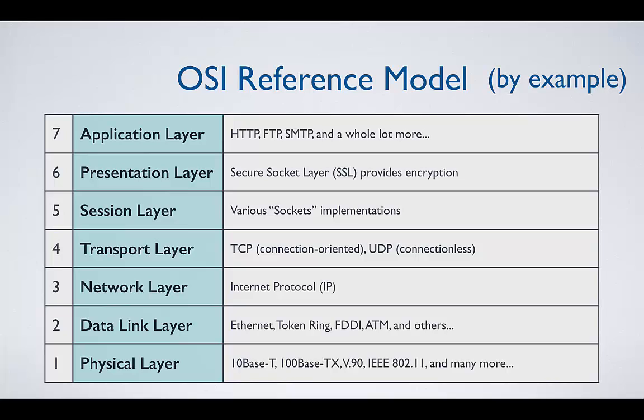At the data link layer, we have protocols related to our local area network, like Ethernet, Token Ring, FDDI — which is for optical fiber — ATM for voice and video, and many more. The network layer, as we mentioned, is where we have the internet protocol. The transport layer is where we have TCP, our connection-oriented protocol, and UDP, our connectionless protocol. The session layer is where various socket implementations reside.